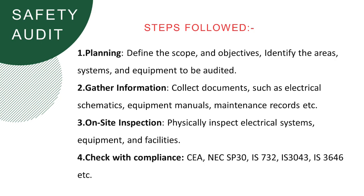The on-site inspection is carried out according to applicable regulations. The main regulations followed in an electrical safety audit include CEA — Central Electricity Authority of India — electrical safety regulations and rules. Additionally, Indian standards for electrical installation IS 732, Indian standard for earthing IS 3043, Indian standard for lighting IS 3646 for lux levels in the premises, as well as national building codes and national electrical codes are followed.